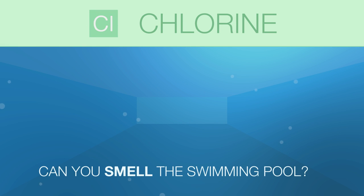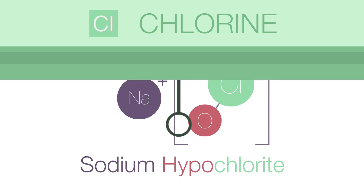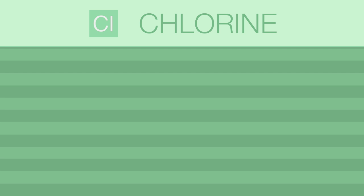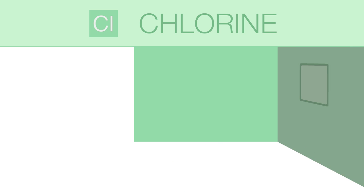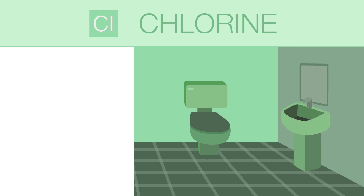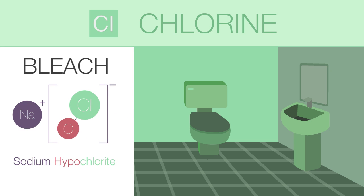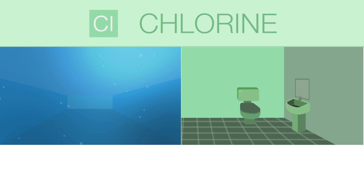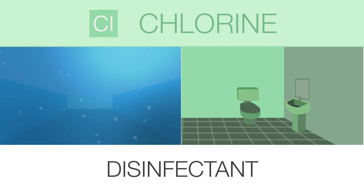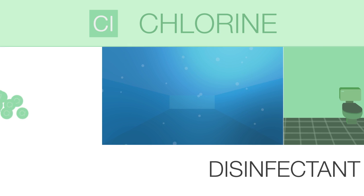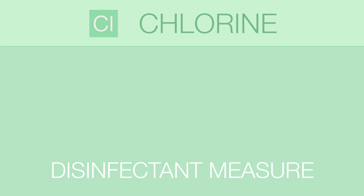Let's close our eyes and think about a swimming pool. Can you smell the swimming pool? That smell is in fact because of a chlorine-containing compound, sodium hypochlorite. Imagine you have been asked to do some chores, cleaning the bathroom sink and toilet. Bleach, which is a common household cleaner, is also a solution of sodium hypochlorite. In both cases, sodium hypochlorite acts as a disinfectant — in other words, it kills germs. Many countries chlorinate their water supply as a disinfectant measure.